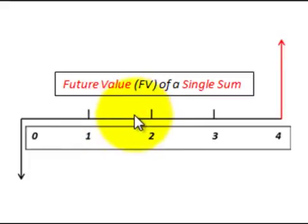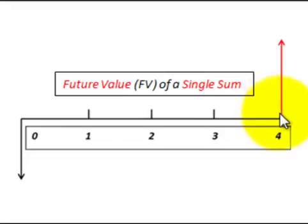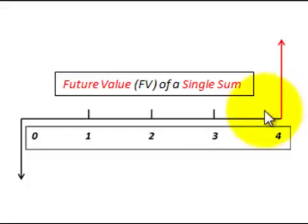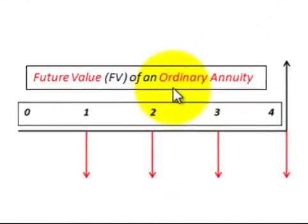Now let's look at our future value diagrams. This is where we have a present value where we know what it's worth in the beginning and we want to discount it forward to determine what the value is at the end of the fourth year. In this case we're just doing a single sum, therefore we use a future value of a single sum function or table.